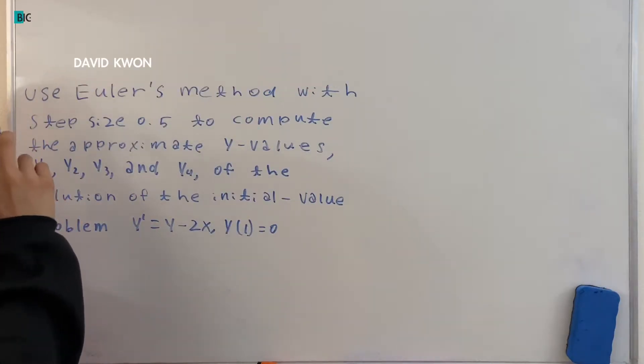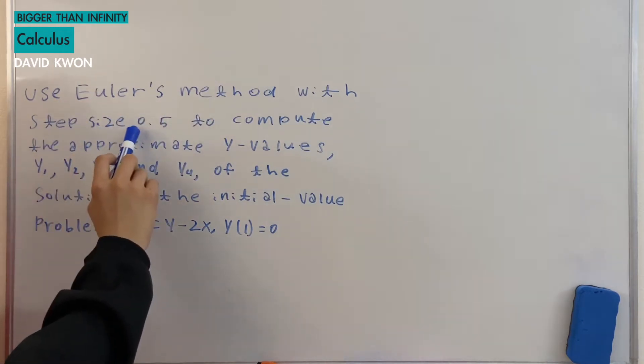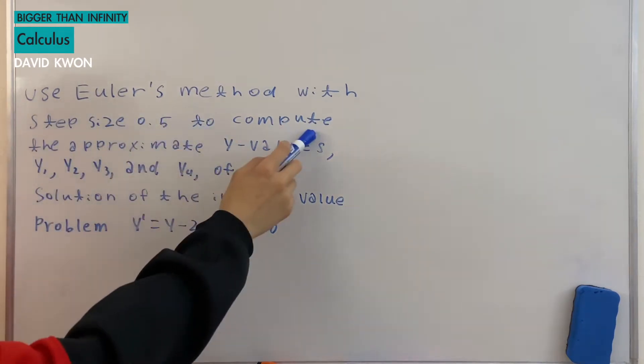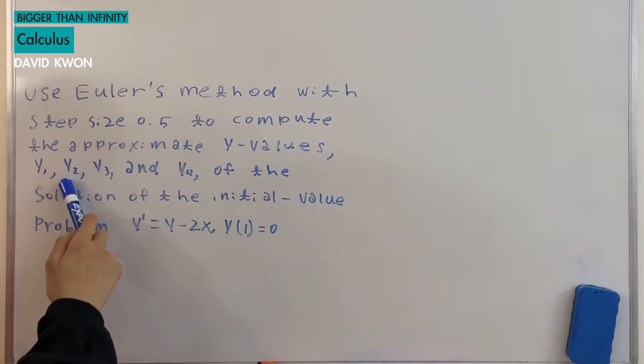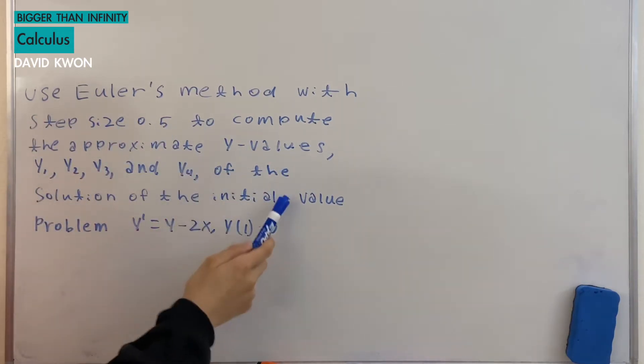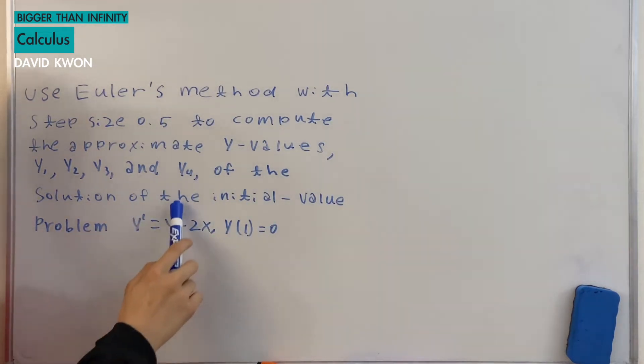It says use Euler's method with a step size of 0.5 to compute the approximate y values y1, y2, y3 and y4 of solutions of the initial value problem y prime is equal to y minus 2x and y of 1 is equal to 0. I will solve this.